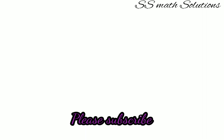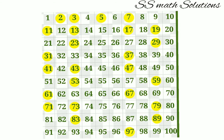Now I hope you understood how to find a prime number and the definition behind it. There are 25 prime numbers from 1 to 100: 2, 3, 5, 7, 11, 13, 17, 19, 23, 29, 31, 37, 41, 43, 47, 53, 59, 61, 67, 71, 73, 79, 83, 89, and 97. These are marked with yellow highlighting in the chart.